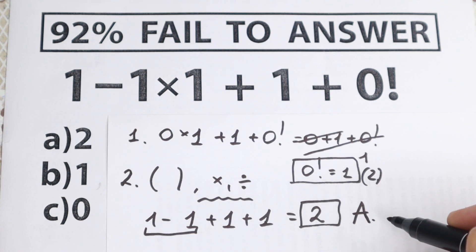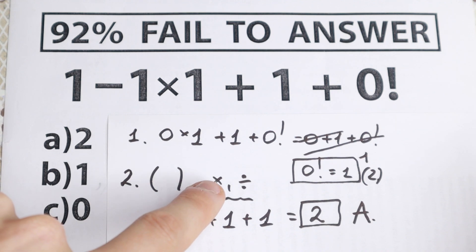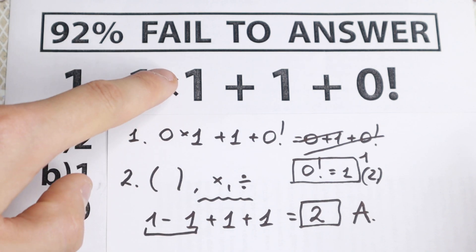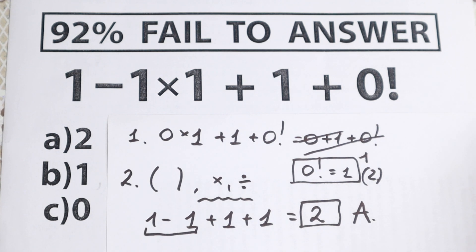Our answer is 2, so option A is the solution. To summarize: first, look at the question — no parentheses. Second step: multiplication and division. Multiply 1 times 1, leaving 1 minus 1 plus 1 plus 0 factorial, which equals 1. Last step: 1 minus 1 plus 1 plus 1 equals 2. Of course, if your country uses PEMDAS or BODMAS, the approach may differ — I'd love to hear how you solve it in your country!